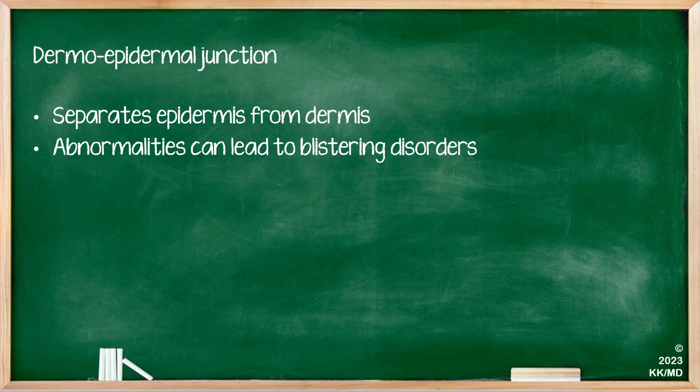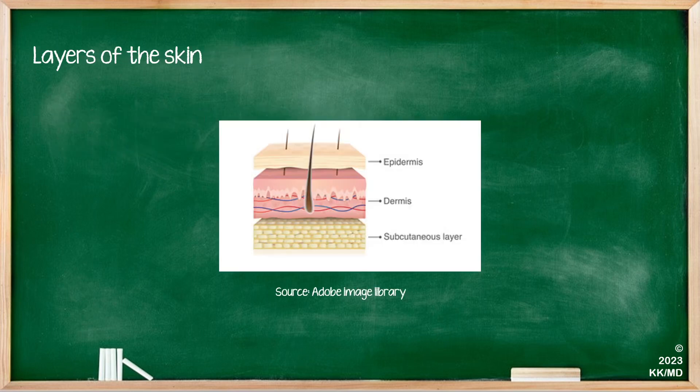Now let's talk about the dermoepidermal junction, which separates the epidermis from the dermis. This is particularly important because abnormalities in this junction lead to quite a few blistering disorders of the skin that we will be talking about later. This schematic summarises the layers of the skin, starting from the outermost layer which is epidermis, to dermis, and then followed by the subcutaneous layer.